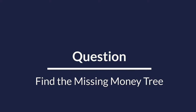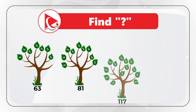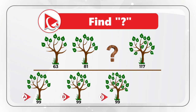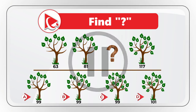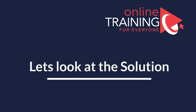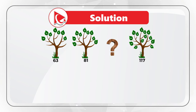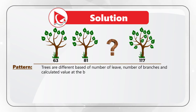Have you ever dreamed of finding the tree where money grows on the branches? Now is your opportunity. You're presented with three money trees and the fourth one is missing. You have four different choices — A, B, C, and D — to find the correct money tree. Take a close look to see if you can find the right matching one. I am moving forward to share my version of the answer. To solve it you need to take a close look at each tree, which is different based on the number of leaves, branches, and the calculated value at the bottom.